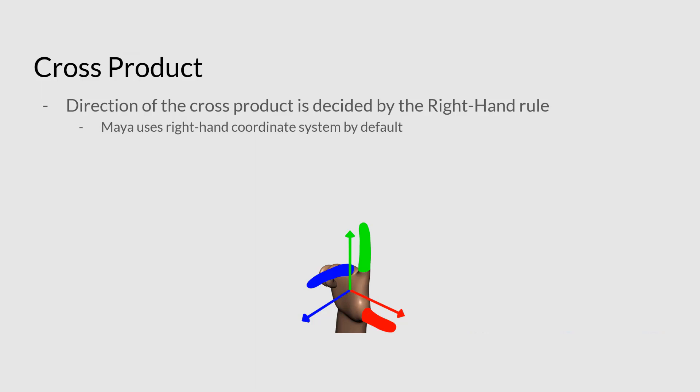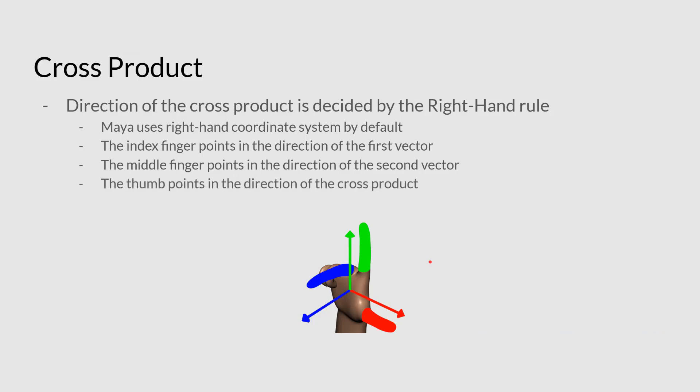The right-hand rule is basically a coordinate system interpretation. Now, Maya uses right-hand coordinate system and there's also the left hand, but we're not going to go into that, we're going to be focusing on what Maya uses. Now, to do this, we will basically have to represent different axes by these fingers. So the index finger will point in the direction of the first vector, while our middle finger will point in the direction of the second vector. Then, as soon as you kind of move your hand to make sure that they're pointing in the right directions, your thumb, as long as you keep this kind of shape, don't move your fingers around, keep that shape, but just rotate your hand, your thumb will then point in the direction of the cross product.